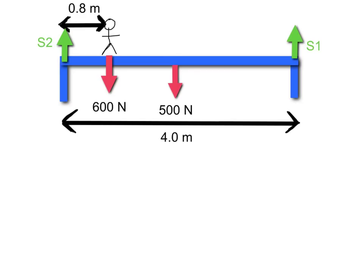Here we've got a gymnast standing on a beam. They weigh 600 newtons and they're 0.8 metres from the left-hand side of the beam. We also know the beam is 4 metres long and it weighs 500 newtons.